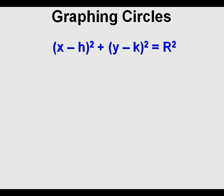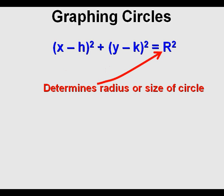In this standard form of a circle equation, X and Y are the variables. R is the constant that stands for radius and is the number that determines the size of the circle.